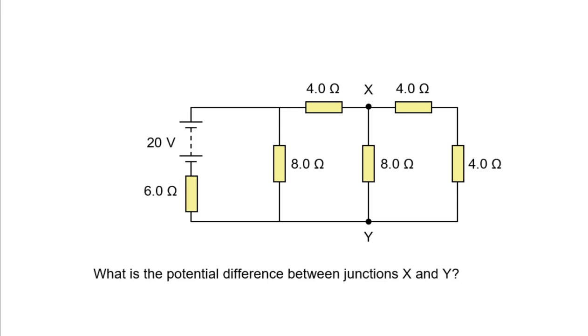Hello, how are you? Here's an XM puzzle, so lots of resistors and a 20V battery. What is the potential difference between points X and Y?